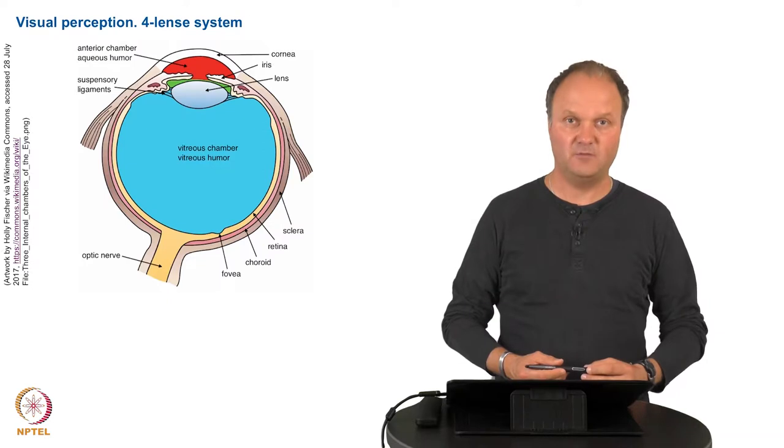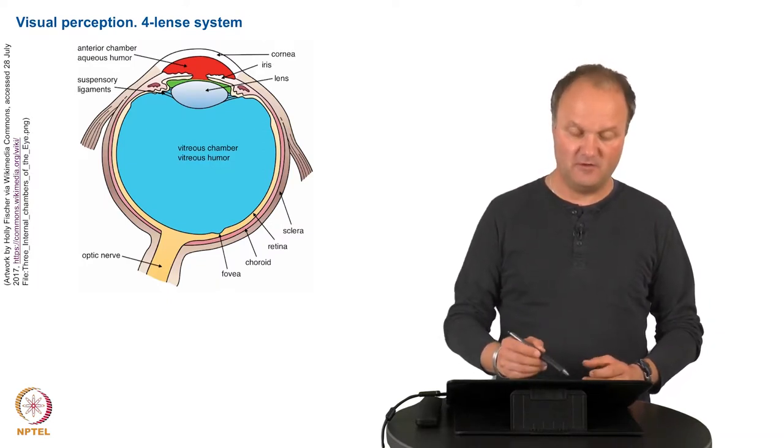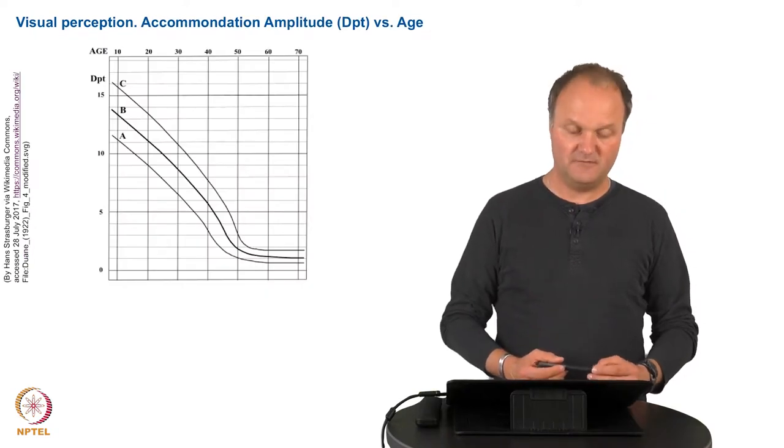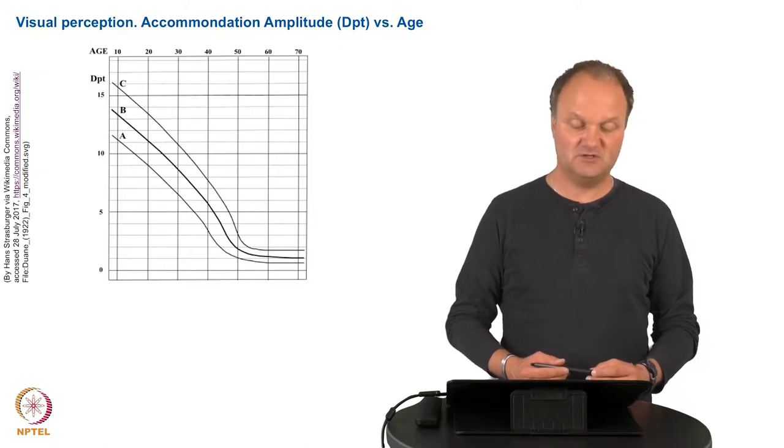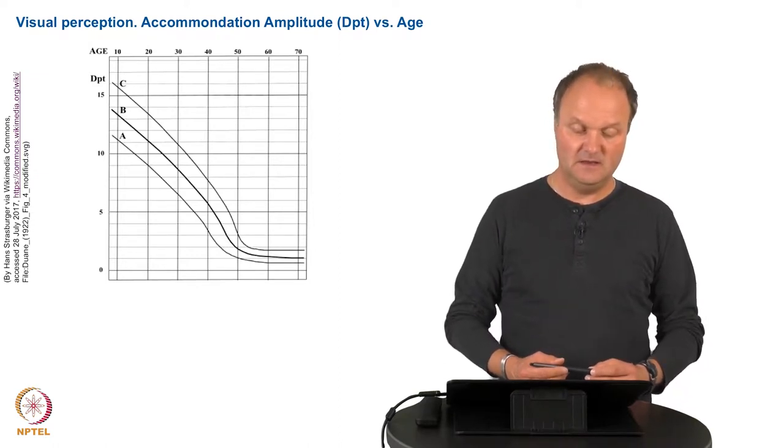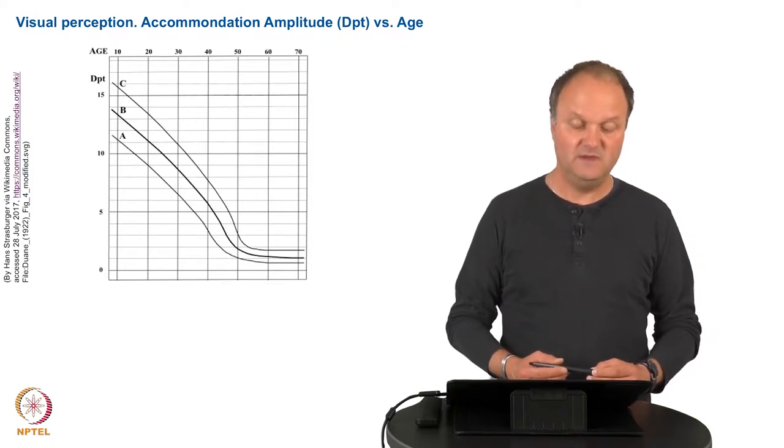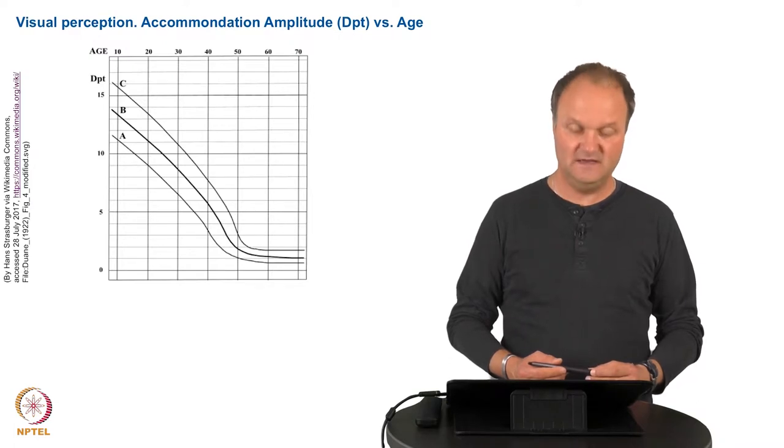This process is called accommodation and this accommodation changes also on the long run. If you get older your refractive power of the lens will diminish. You see the refractive power in terms of diopters for an average test participant, that's curve B and the standard deviation, these are curves A and C. And you see that it decreases significantly with age.